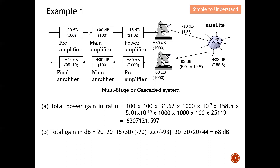To find the total power gain in ratio, I multiply all the individual gains together: 100 × 100 × 31.62 × 1000 × 10⁻⁷ × 158.5 × 5.01×10⁻¹⁰ × 1000 × 1000 × 100 × 25119. This gives a total power gain of 6,307,121.597 in ratio.